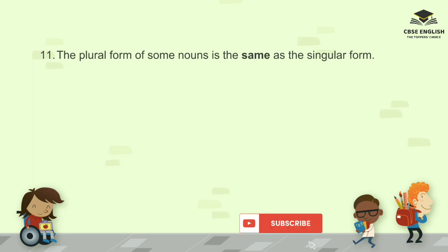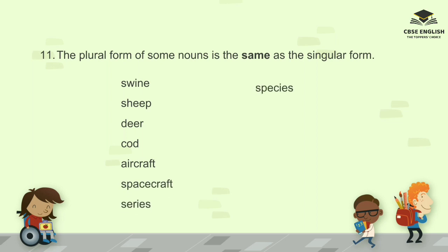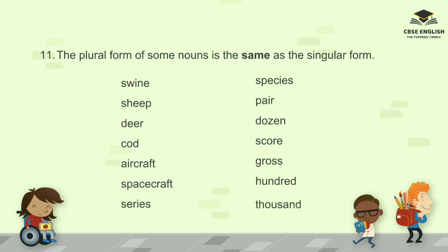Number eleven: the plural form of some nouns is the same as the singular form. For example: swine, sheep, deer, cod, aircraft, spacecraft, series, species, pair, dozen, score, gross, hundred, thousand.